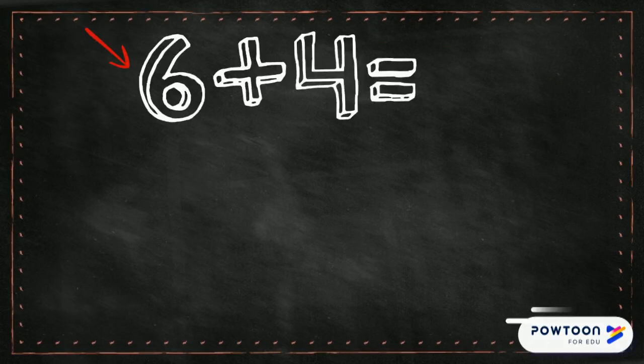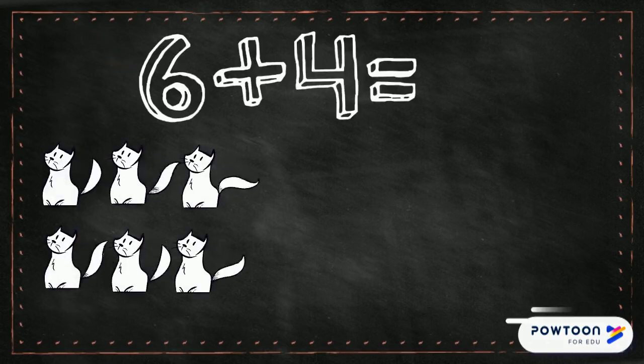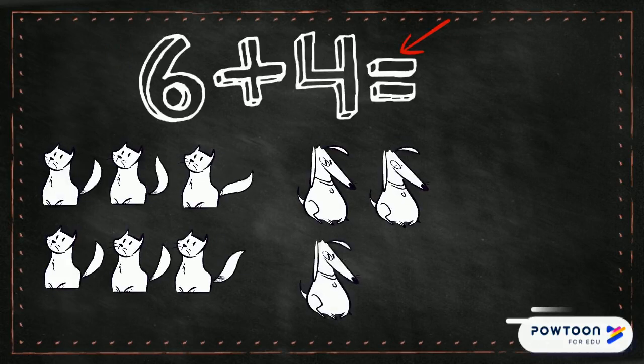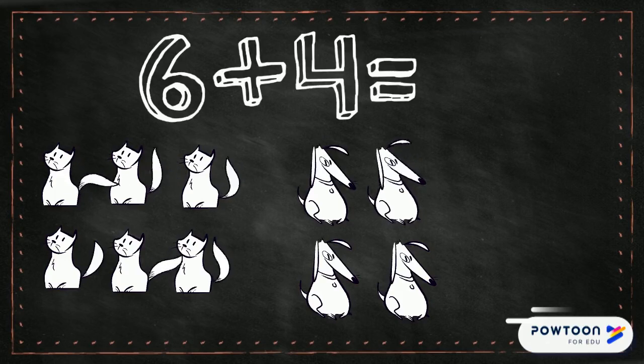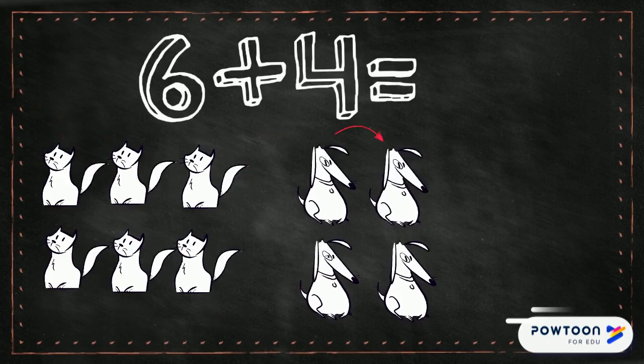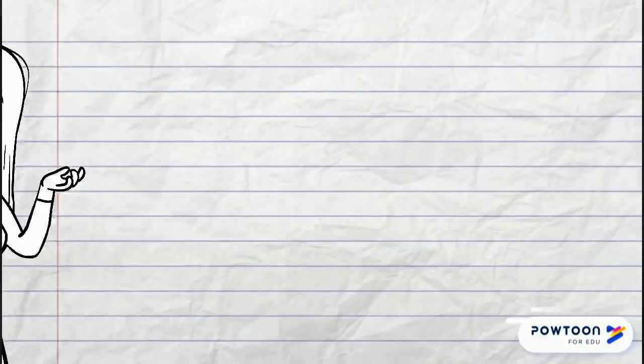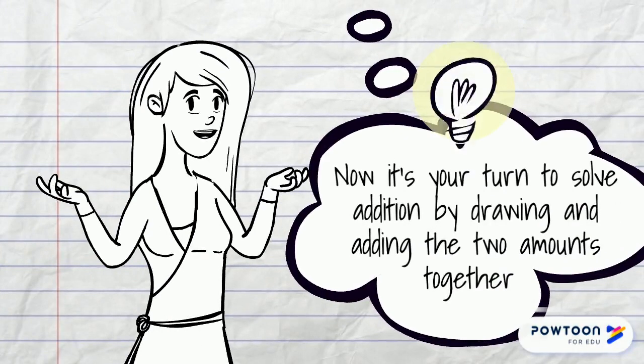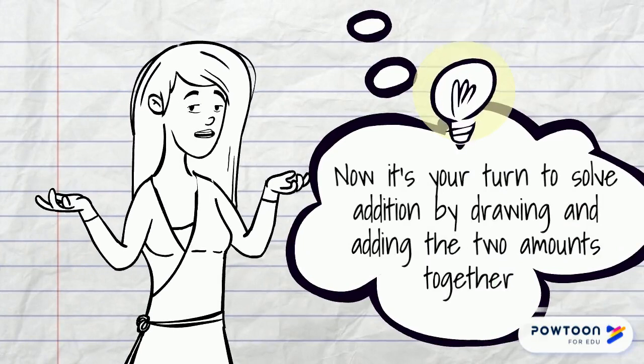I'm gonna draw six cats. Now four dogs. Let's count how many we've got all together. One, two, three, four, five, six, seven, eight, nine, ten. Six plus four equals ten. Thanks for watching! Now it's your turn to solve addition by drawing and adding the two amounts together.